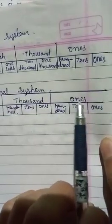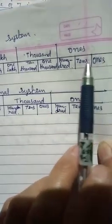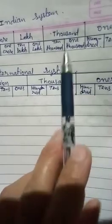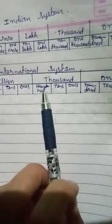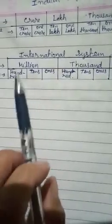Another difference: in the ones period we have three place values in both systems. But in the thousands period, Indian has only two place values whereas international has three. So in international we count three-three: one-two-three of ones, one-two-three of thousands, one-two-three of millions. In Indian we put the comma after three first, then two-two, but in international we put commas three-three from the beginning till the end.